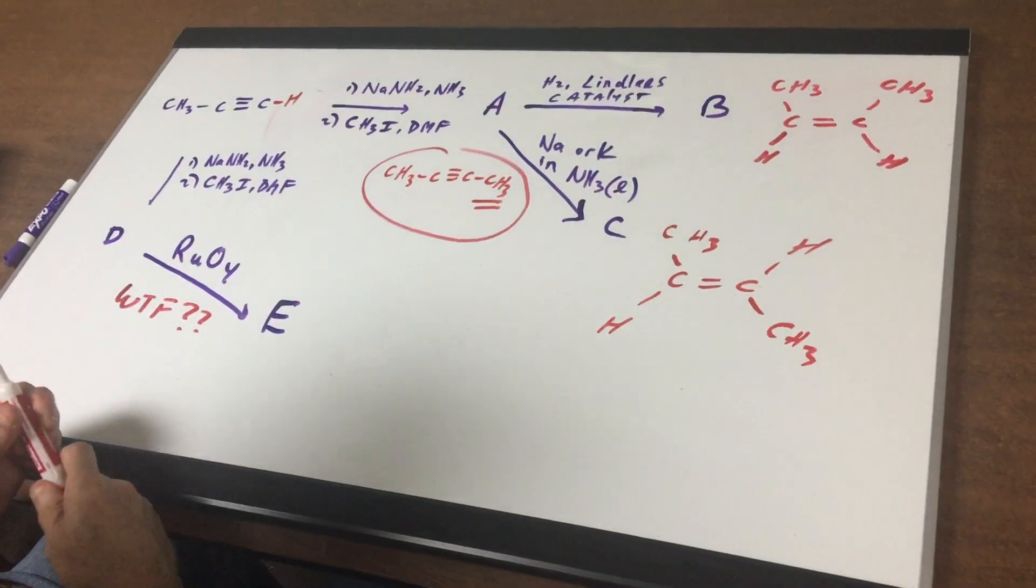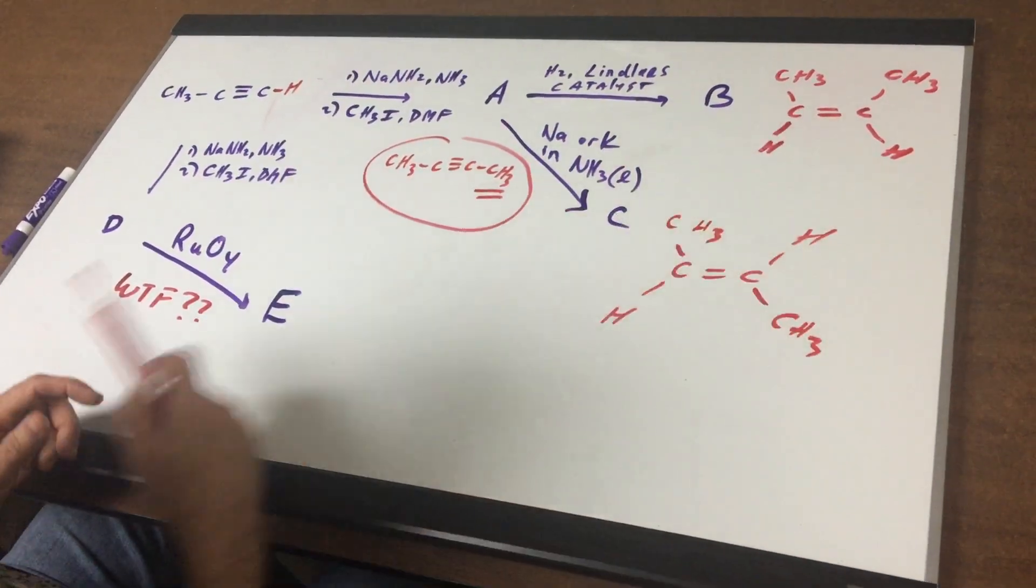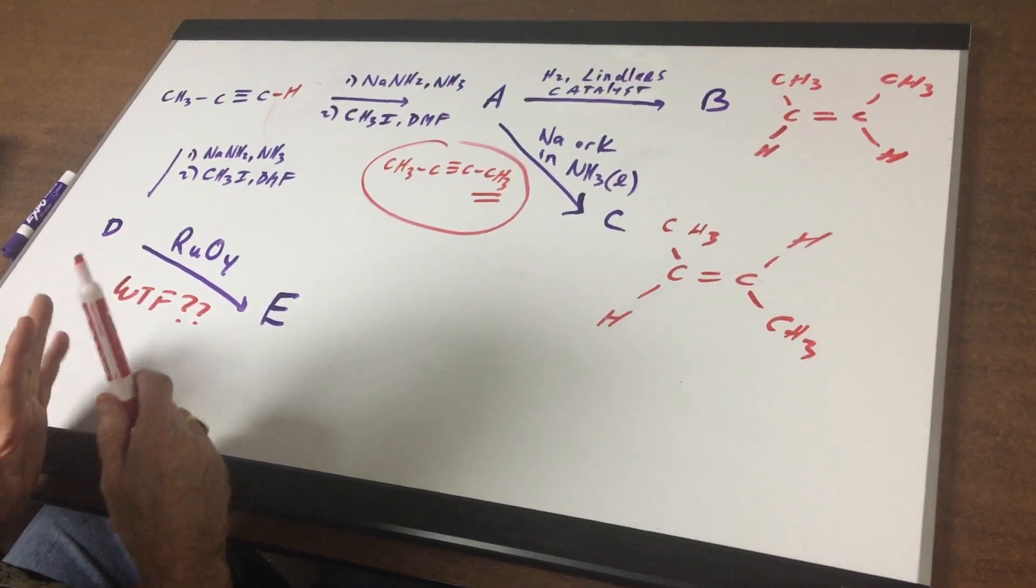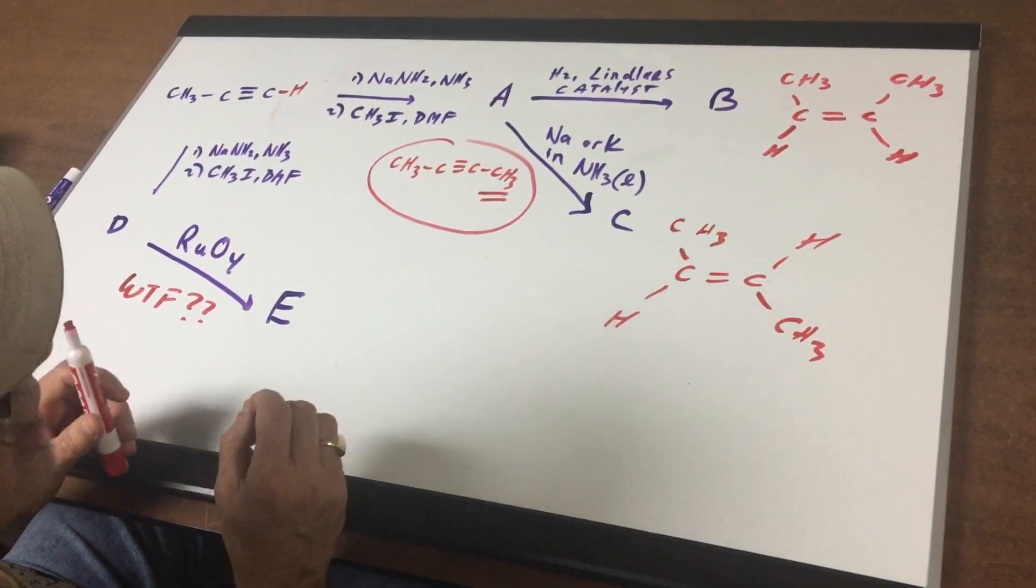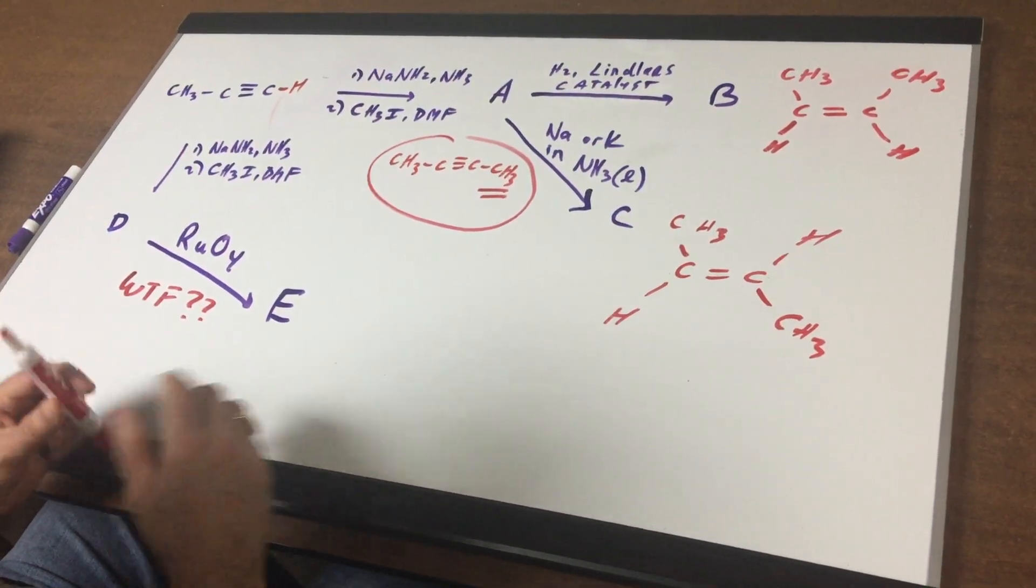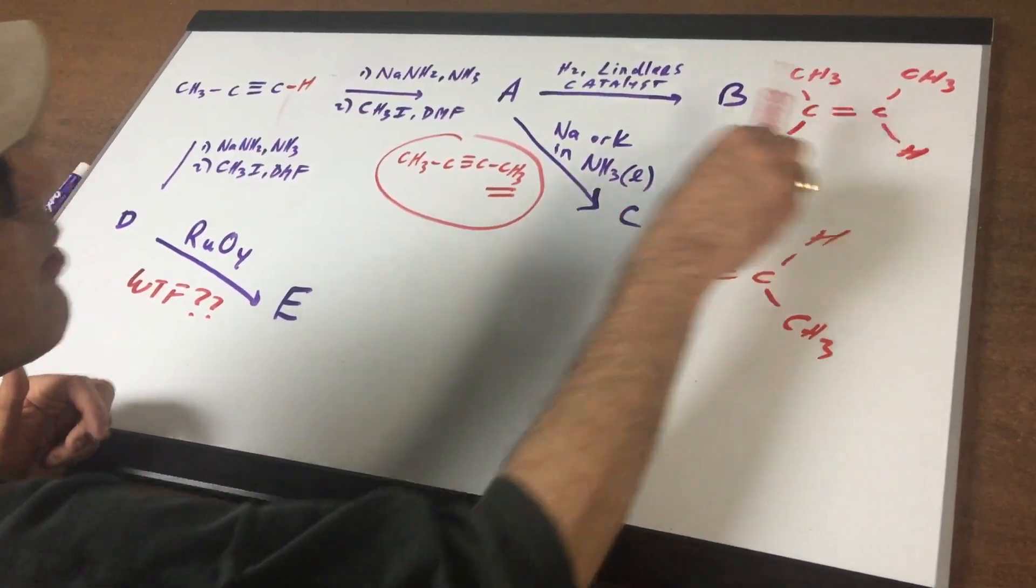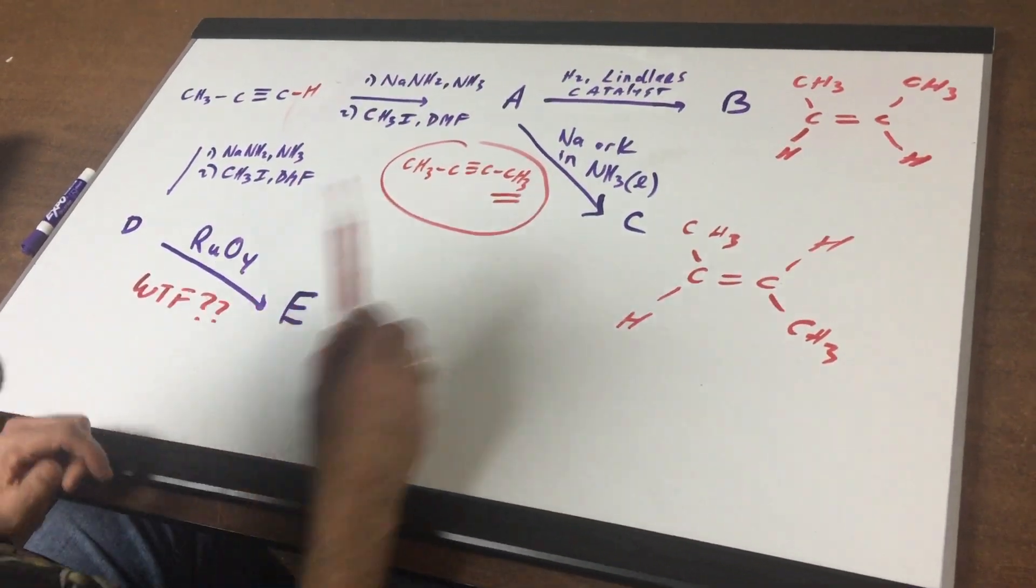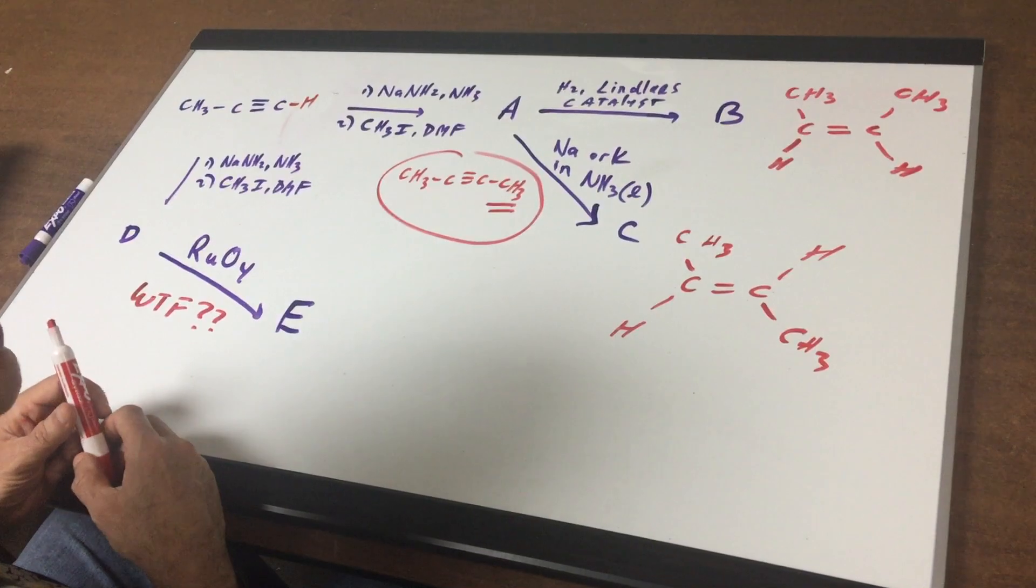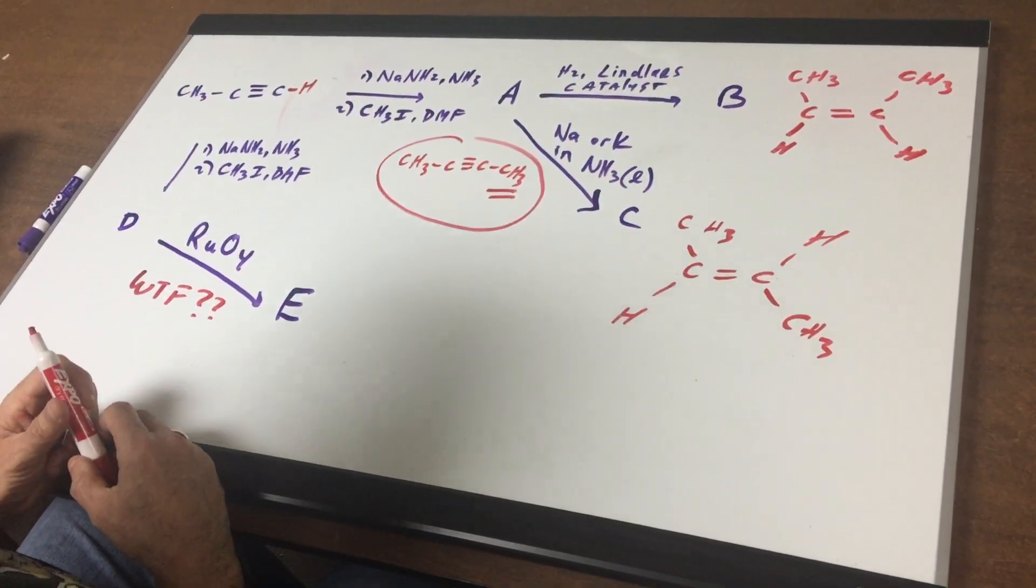Okay so as you can see these two reactions are said to be stereospecific because they give you one stereoisomer in exclusivity. This would be the cis stereoisomer and this would be the trans. Don't forget if I ever asked you what's the relationship between cis and trans they're diastereomers.